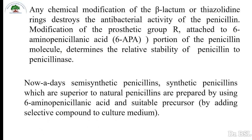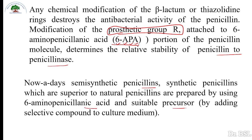Any chemical modification of the beta-lactam or thiazolidine ring destroys the antibiotic — that is, antibacterial — activity of penicillin. Modification of the prosthetic group R attached to 6-aminopenicillanic acid (6-APA) determines the relative stability of penicillin to penicillinase. Nowadays, semi-synthetic penicillins superior to natural penicillin are prepared using 6-APA and suitable precursors by adding selective compounds to the culture medium.